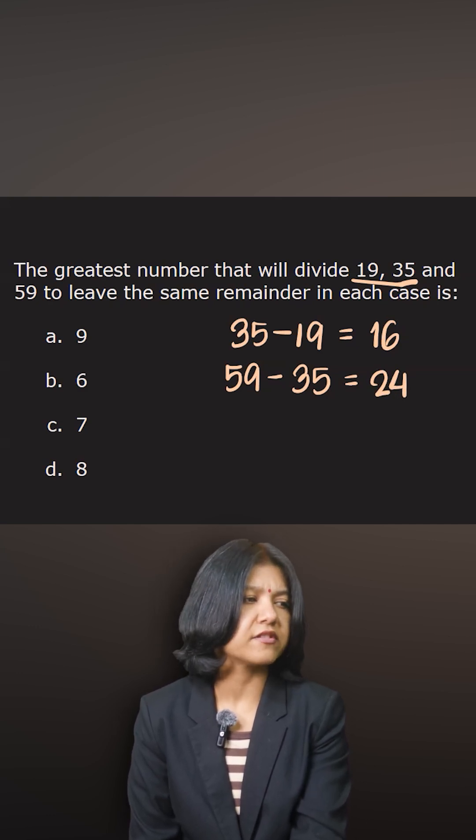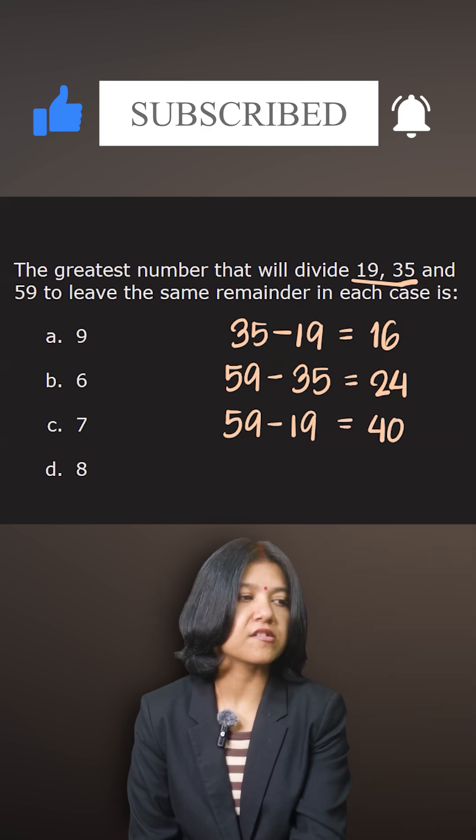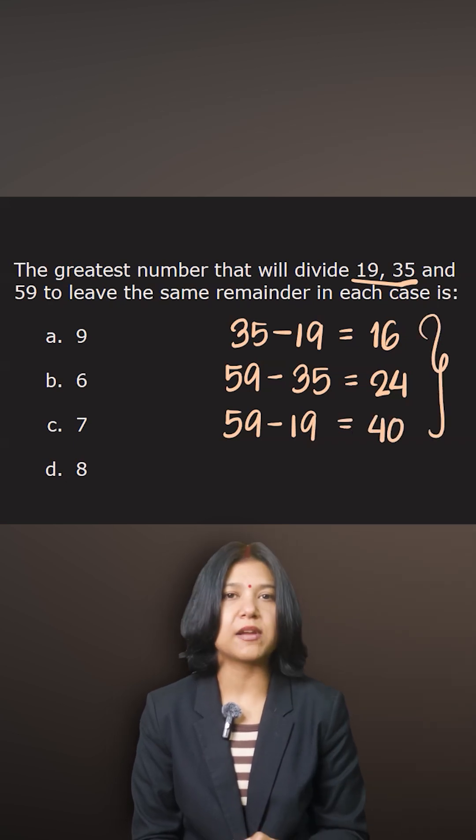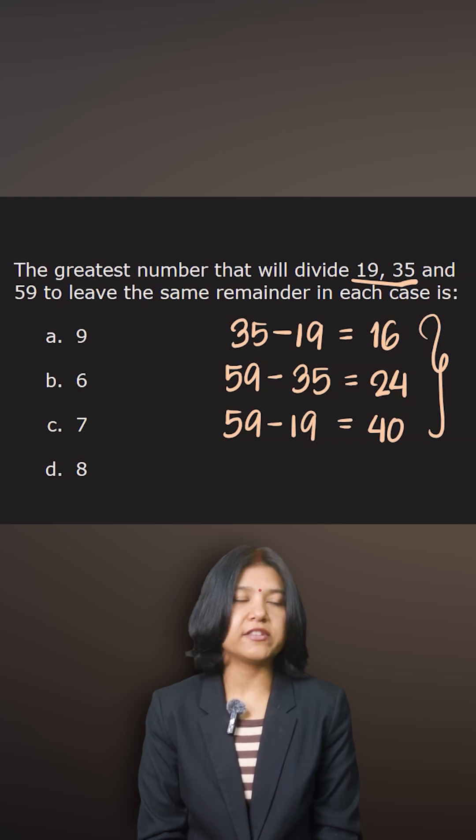And last, we will look at the difference between 19 and 59 as well, which is clearly 40. Now look at the three differences you got, because they are leaving the same remainder, then obviously the common number that will divide all of them leaving the same remainder will be the HCF of all the differences we found.